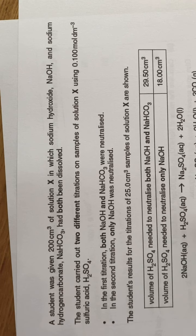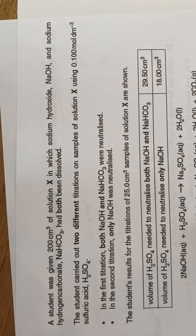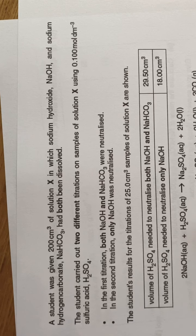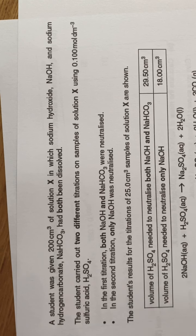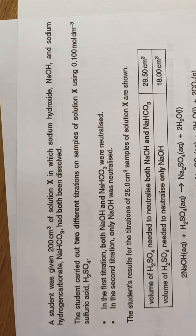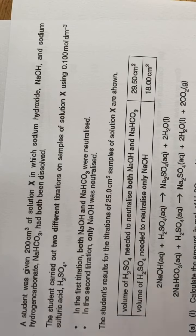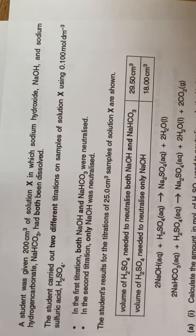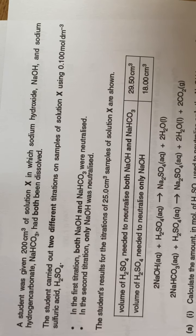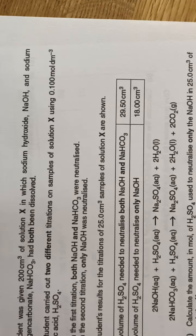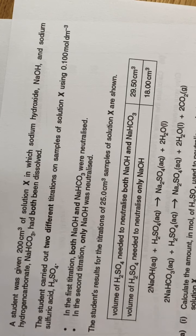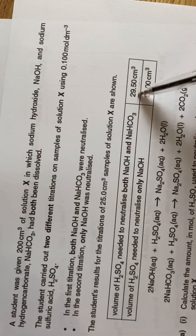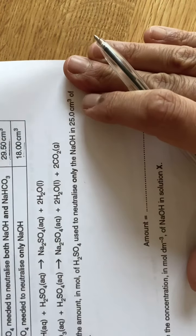A 200 cm³ solution X was given, in which sodium hydroxide and sodium hydrogen carbonate were both dissolved. A student carried out two different titrations on sample X using 0.1 mol/dm³ sulfuric acid. In the first titration, both sodium hydroxide and sodium hydrogen carbonate were neutralized. In the second, only sodium hydroxide was neutralized. The results: 25.5 cm³ for both, and 18 cm³ for just sodium hydroxide.